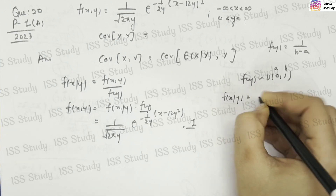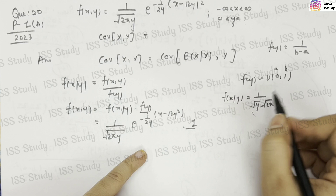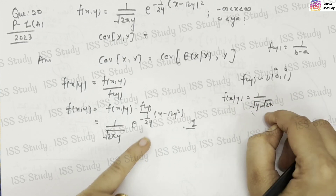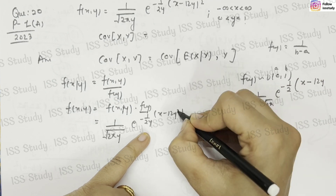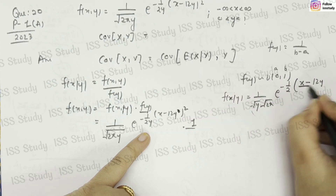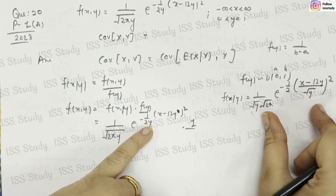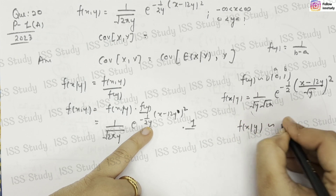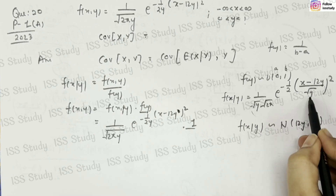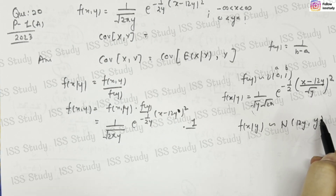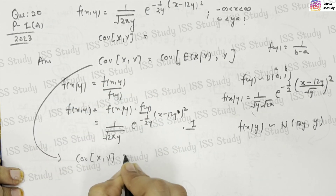Now for the distribution of x given y, rearranging: x given y can be written as 1 upon (root y times root(2π)), which represents 1 upon (σ root(2π)) times e to the power minus 1/2 times ((x minus μ) upon σ) squared. At the place of σ I am writing root y, so σ squared equals y. This represents the normal distribution, so f(x|y) follows a normal distribution with mean 12y and variance y.